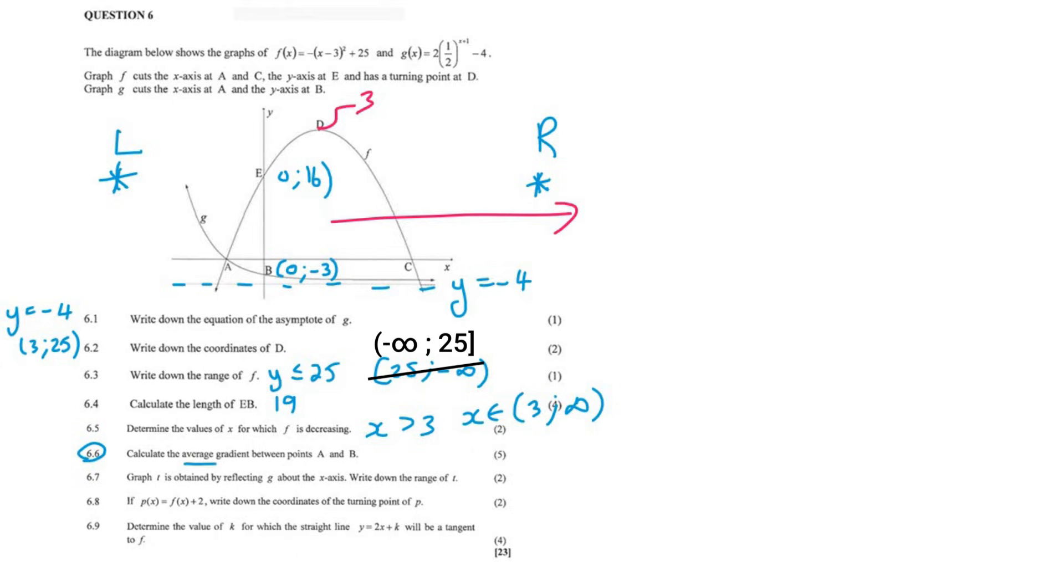6.6 speaks about the average gradient. In grade 9 and 10 we used to work out the gradient of a straight line using this formula. When they say average gradient, it is exactly the same formula. The only reason they're using the word average is because it's not a straight line, it's a curve. Calculate the average gradient between a and b. We need the coordinates of a. We already have the coordinates of b.